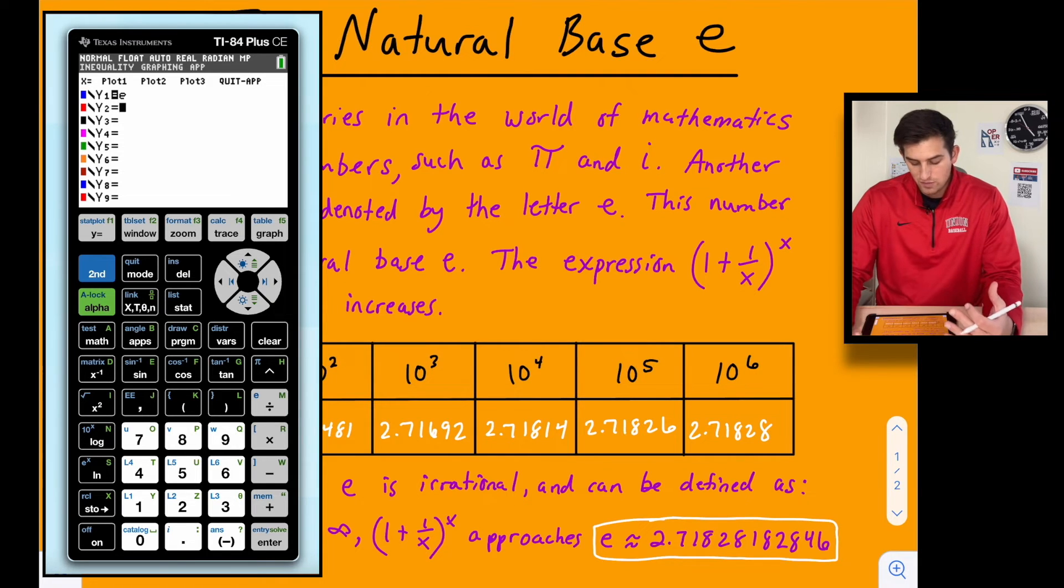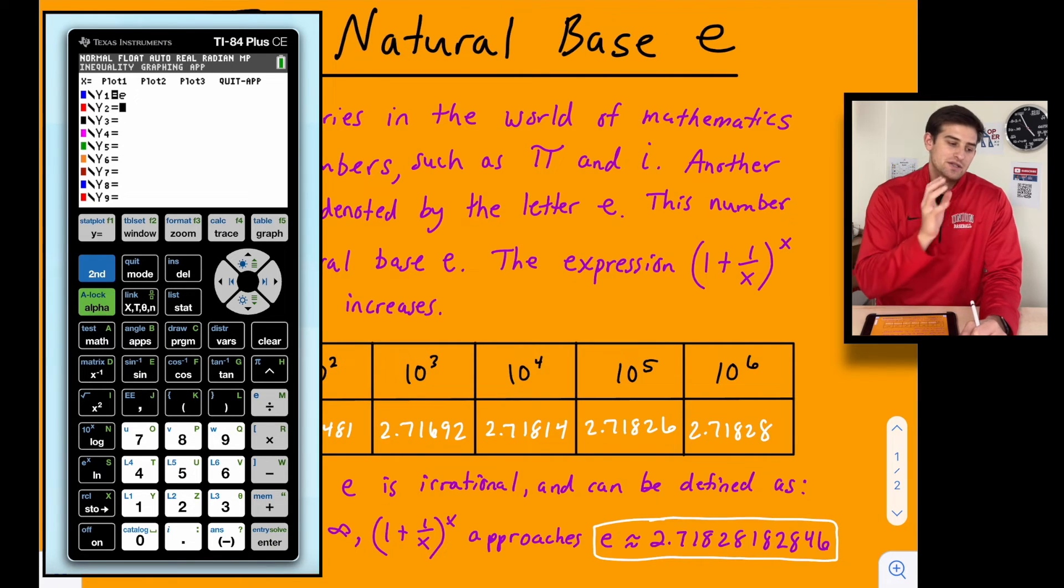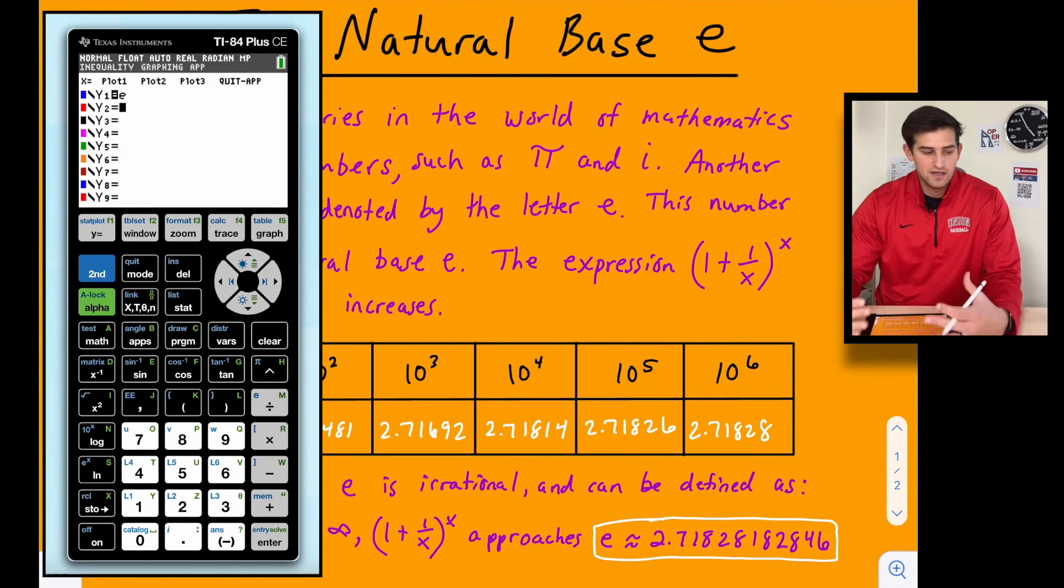Now for Y2, let's graph this expression that we said as x approaches positive infinity is going to approach Y equals e. So remember with Y equals e, we're saying e is approximately 2.72. So if we're just saying Y equals 2.72, that'd be like just a horizontal line on our graph. So that's what Y equals e is going to look like.